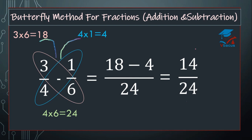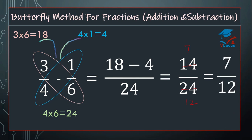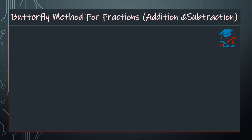That gives 14 over 24. Bring it to the lowest term — divide 14 and 24 by 2. So 14 divided by 2 is 7, and 24 divided by 2 is 12. So your answer is 7 over 12. Let us go to the next sum.